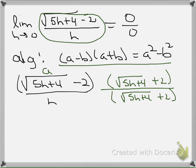And then it's going to be minus b squared. So that's b. So that's going to be the square root of 5h plus 4 all squared minus 2 squared, which is 4.